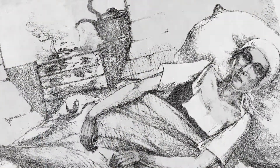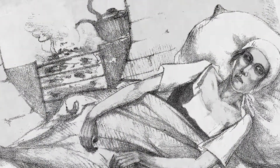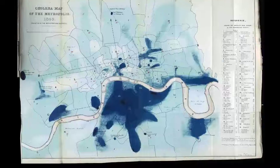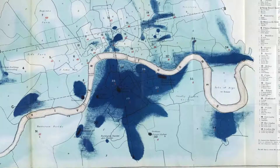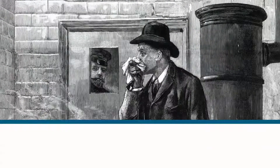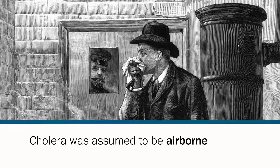The second great cholera epidemic in London was in 1848. This map from an official report of the time shows where cholera deaths were concentrated in the city. In the mid-19th century, cholera was assumed to be airborne and contracted by breathing through the mouth.